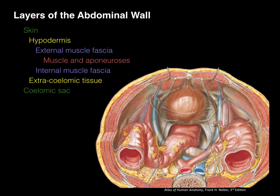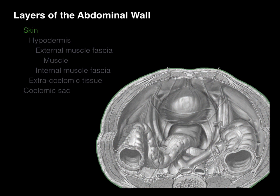Now let's cover those same seven layers using a picture from Netter's Atlas — a cross-section through the abdomen. It's an anatomical image, so anterior is at the top of the screen, with left and right sides visible. This view is oriented from foot to head, which is different from looking at an axial section of a CT or MRI. Let's start with the skin.